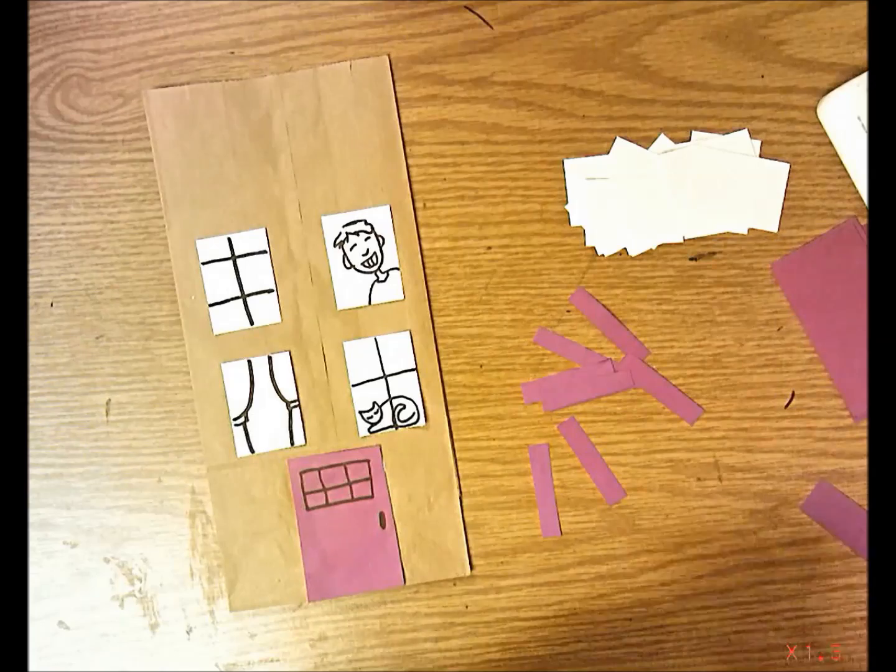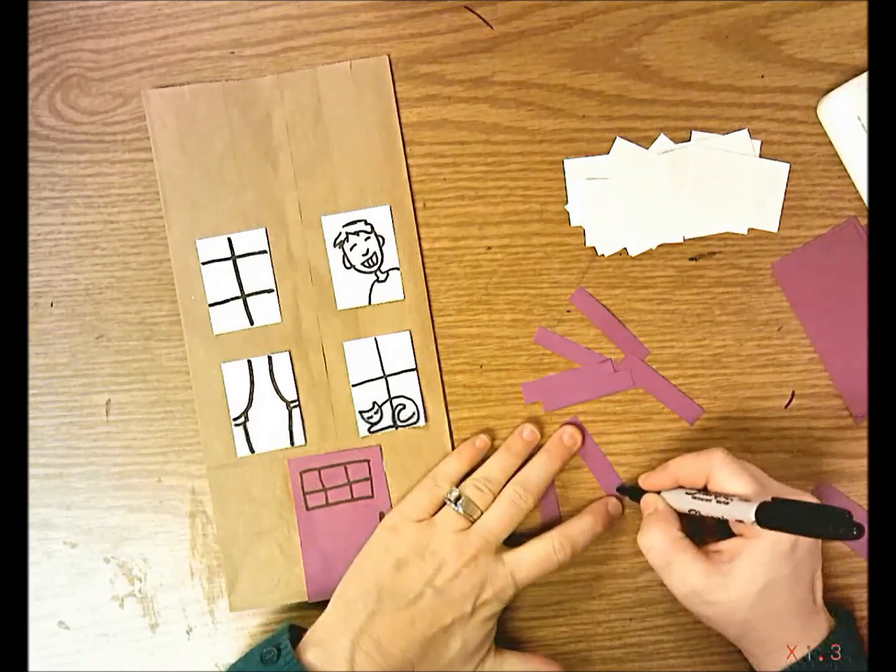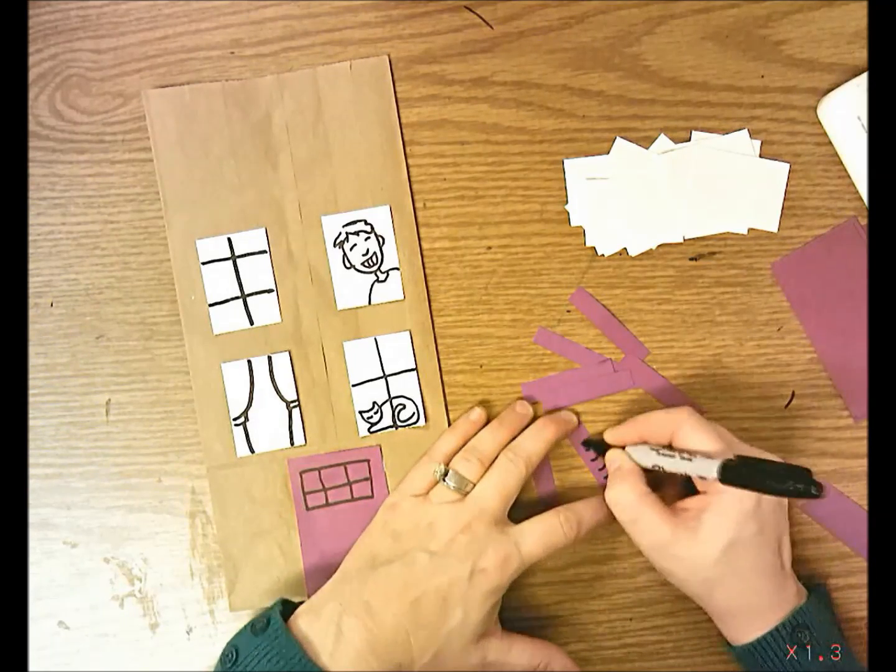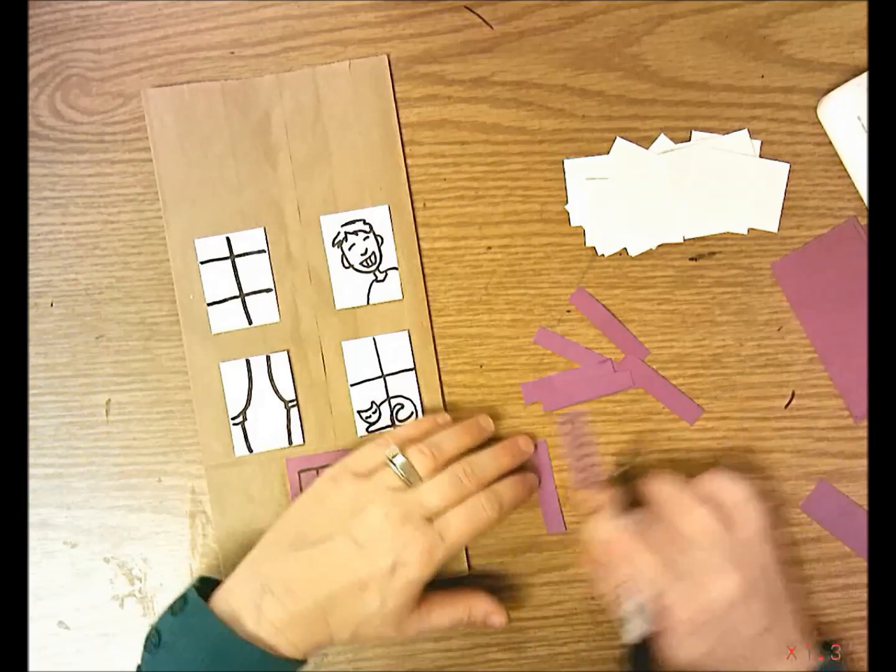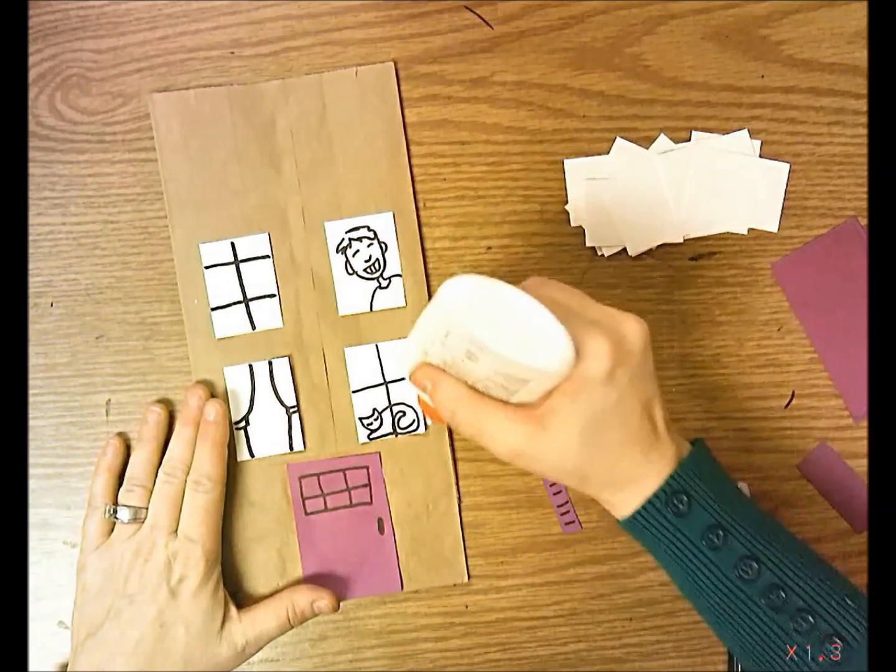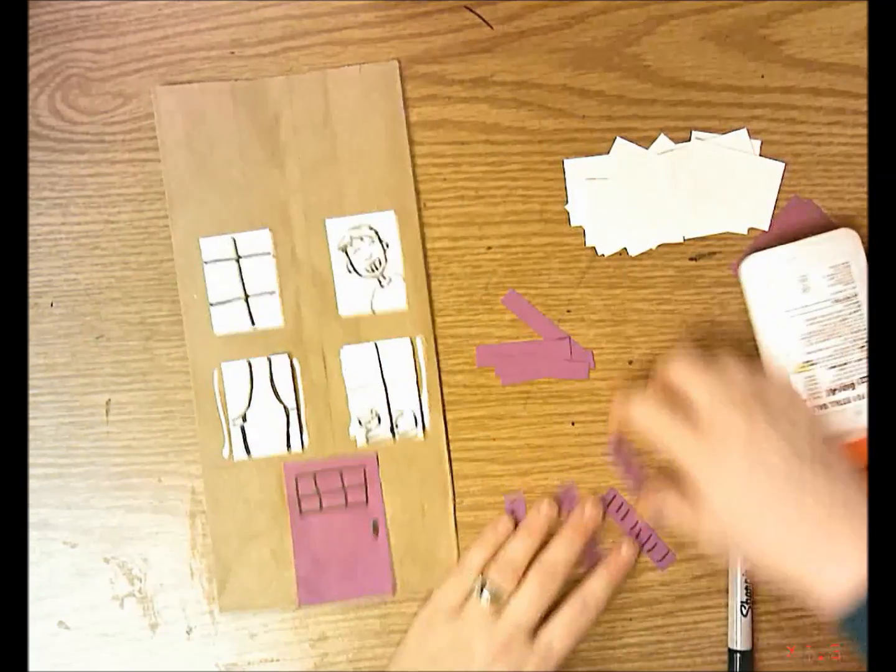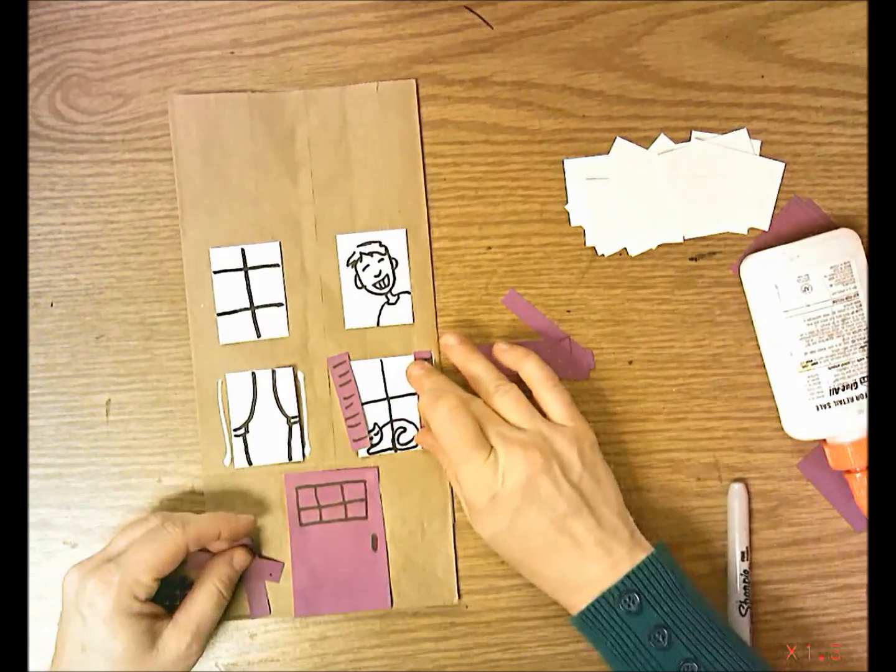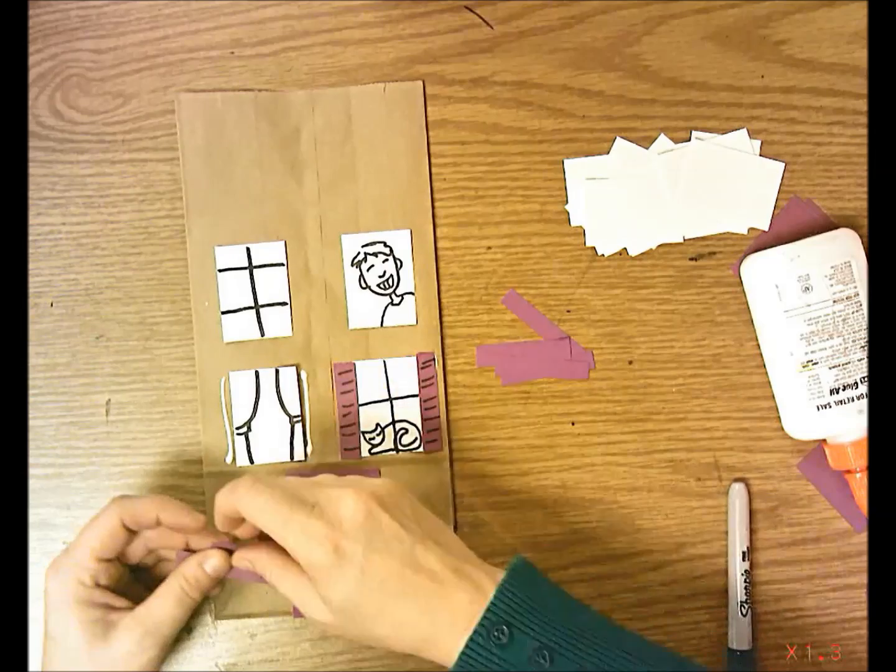You can glue these on just like this next to the window so they look like shutters. Or you could add with marker some of these horizontal lines going across before you glue them on. Then just put a line of glue next to the window and add the shutters. Don't add them crooked or it'll look like an abandoned house. Add them nice and straight.